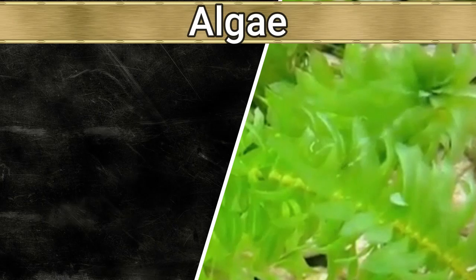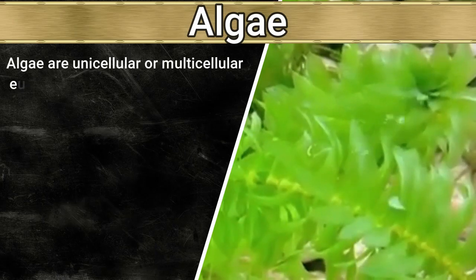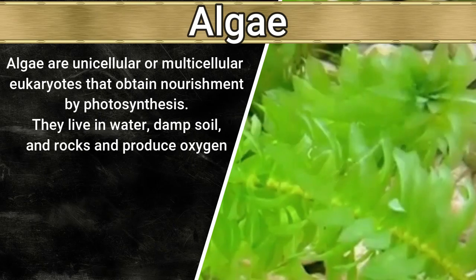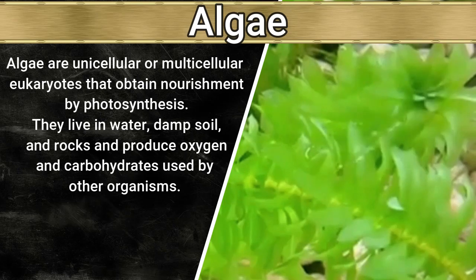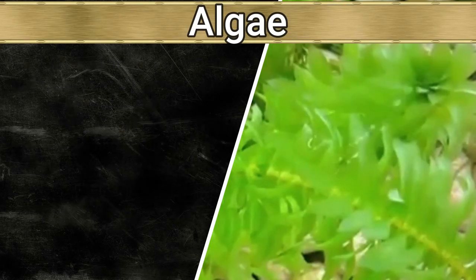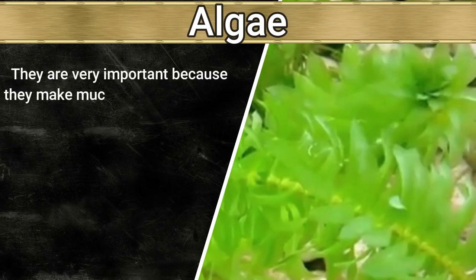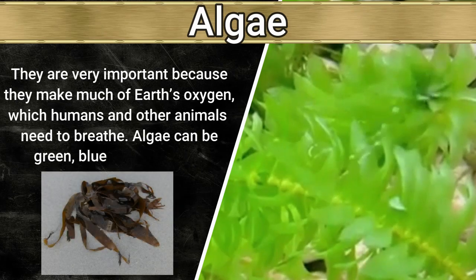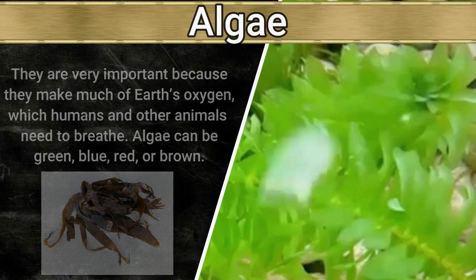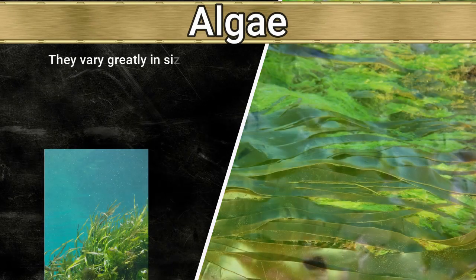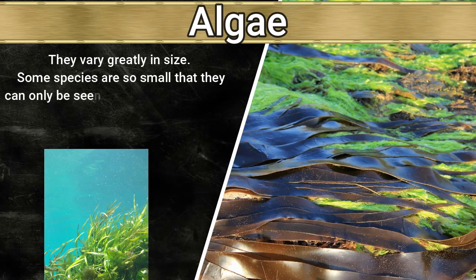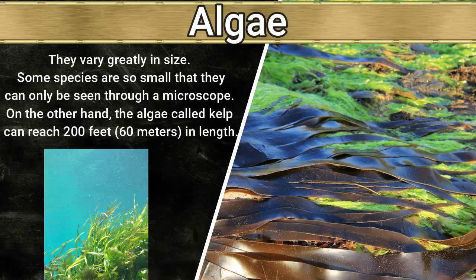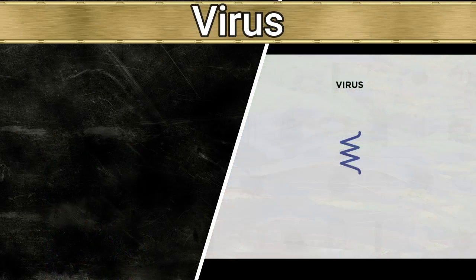Algae are unicellular or multicellular eukaryotes that obtain nourishment by photosynthesis. They live in water, thin soils, and rocks, and produce oxygen and carbohydrates used by other organisms. They are very important because they make much of Earth's oxygen, which humans and other animals need to breathe. Algae can be green, blue, red, or brown. They vary greatly in size — some species are so small they can only be seen through a microscope, while the algae called kelp can reach 200 feet in length.